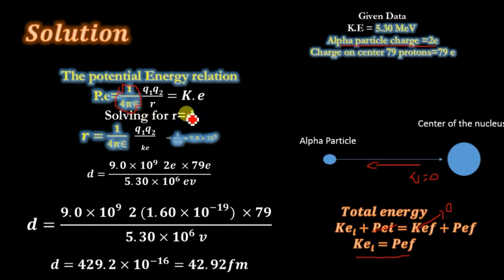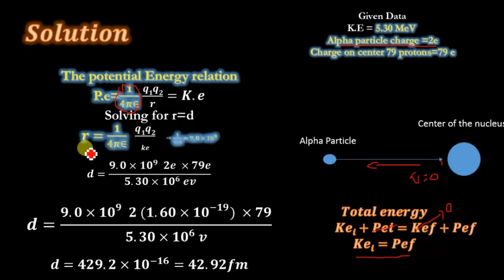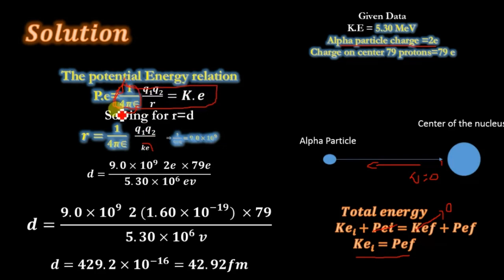Solving for d, which is the distance of closest approach, we rearrange the equation: r equals 1 over 4 pi epsilon naught times q1 q2 divided by kinetic energy. We have solved for r, where r equals d. This whole constant term k has a value of 9.0 times 10 to the power 9.